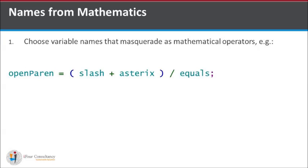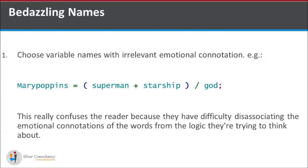Variable names must not be chosen to masquerade as mathematical operators, and should avoid irrelevant emotional connotation. Variable names should be chosen with respect to the item they represent. This helps in longer usage of the variable without any conflicts, and also people who haven't worked on the application will be able to understand what they represent.